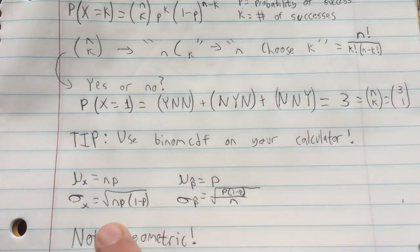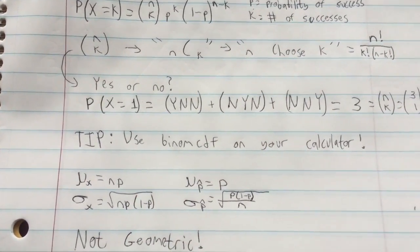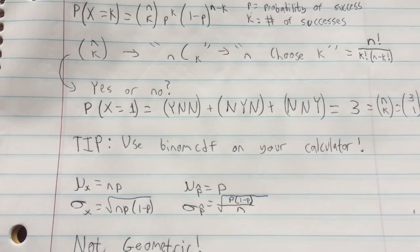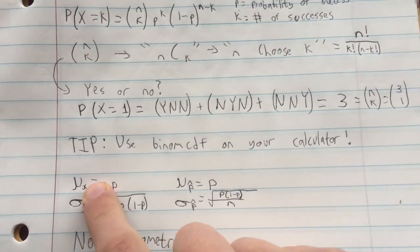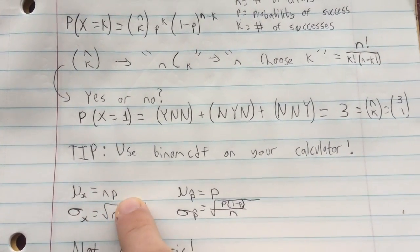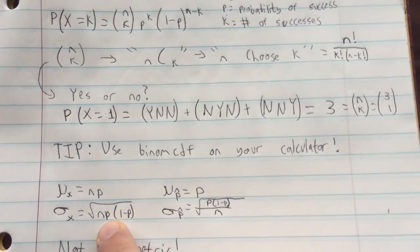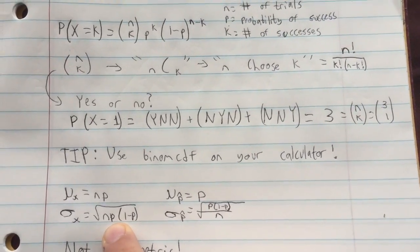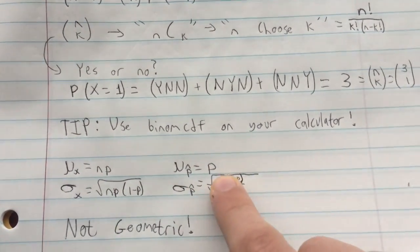So now, if you want to do normal inference on the binomial distribution, for sample means you can use NP for the mean and for standard deviation, the square root of NP times 1 minus P. And similarly,